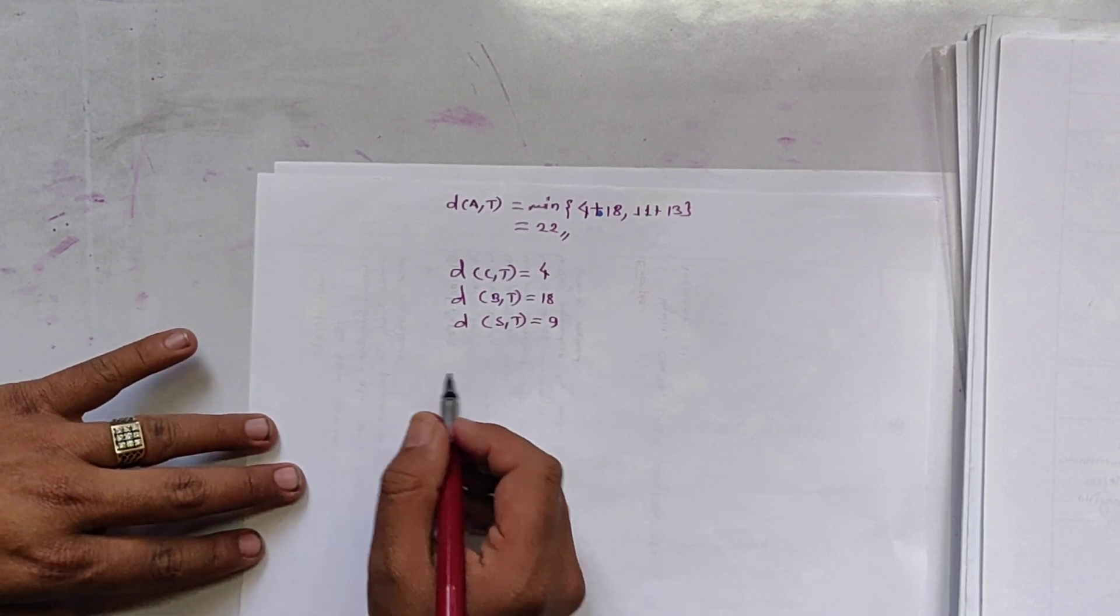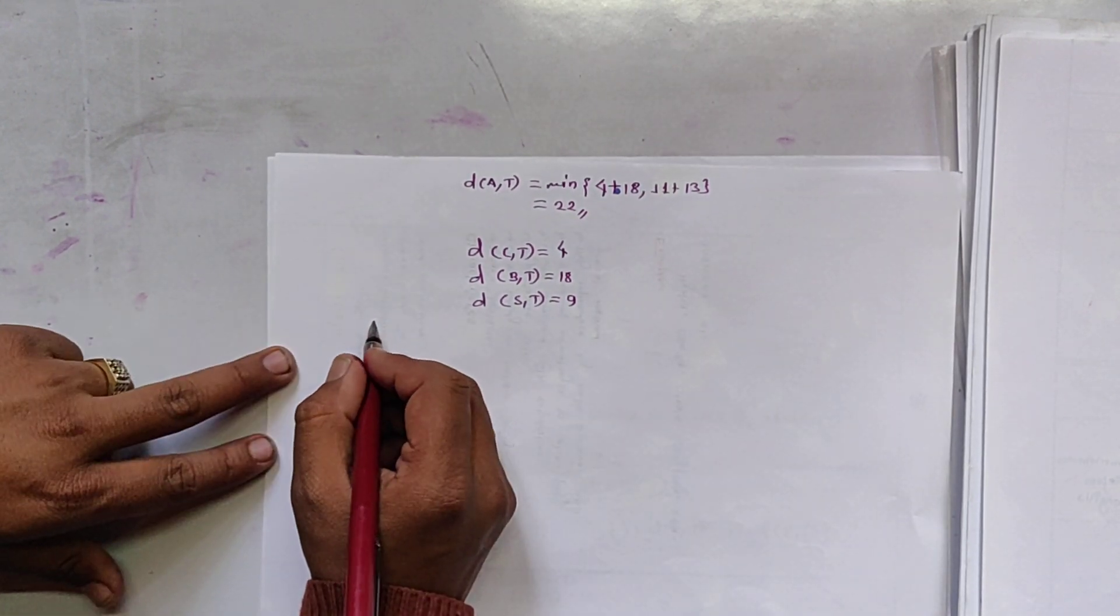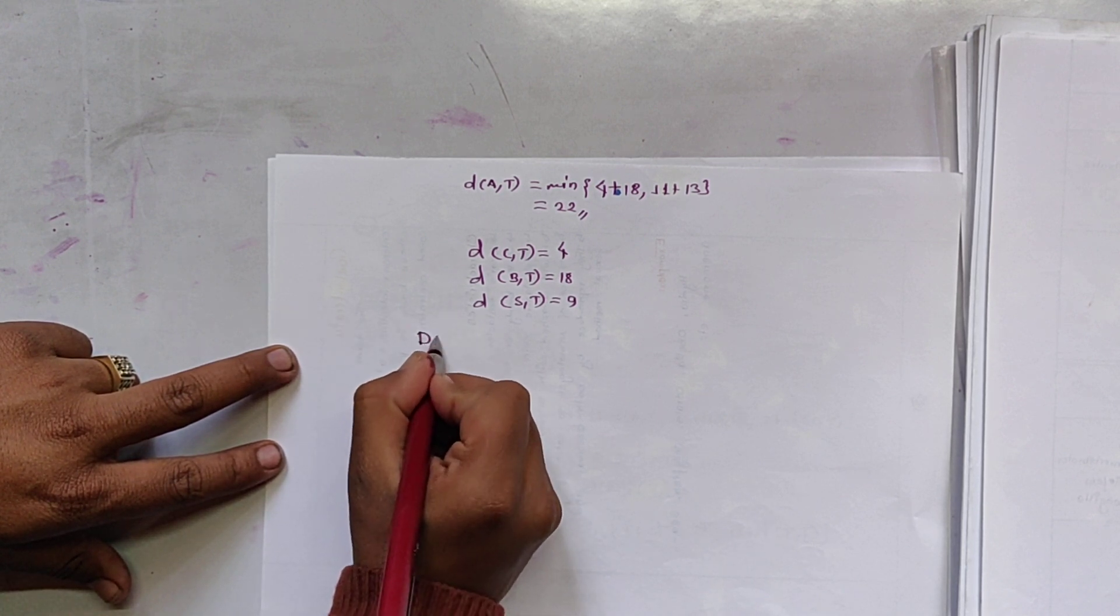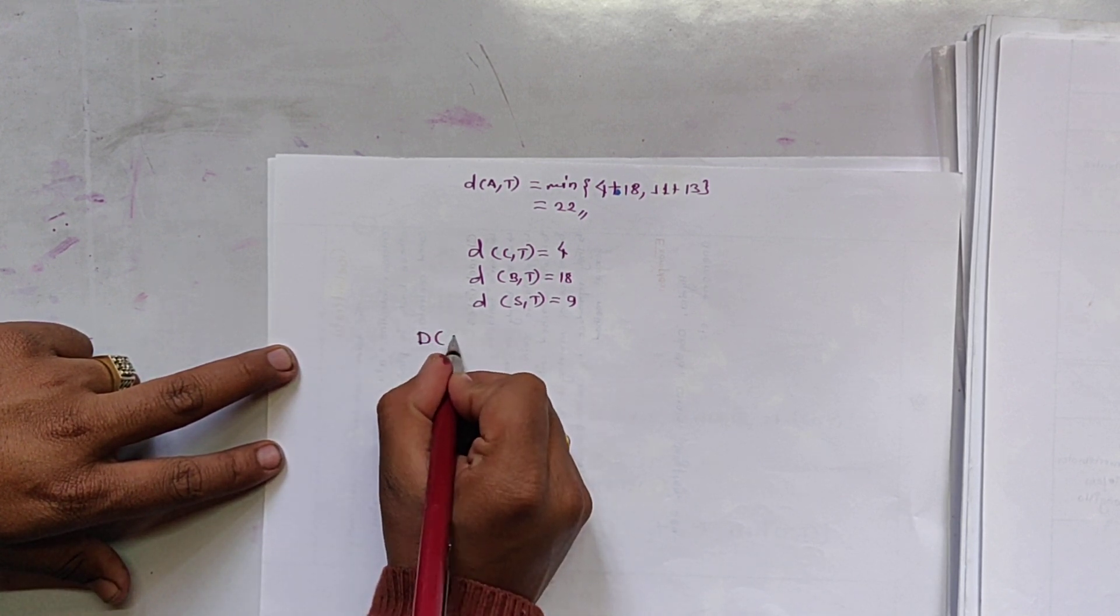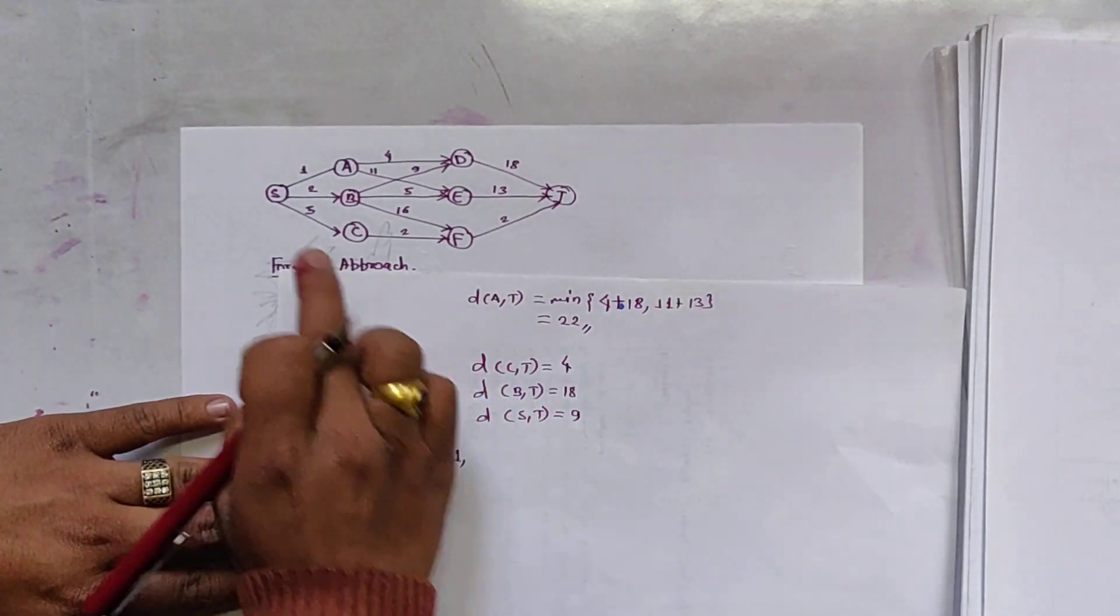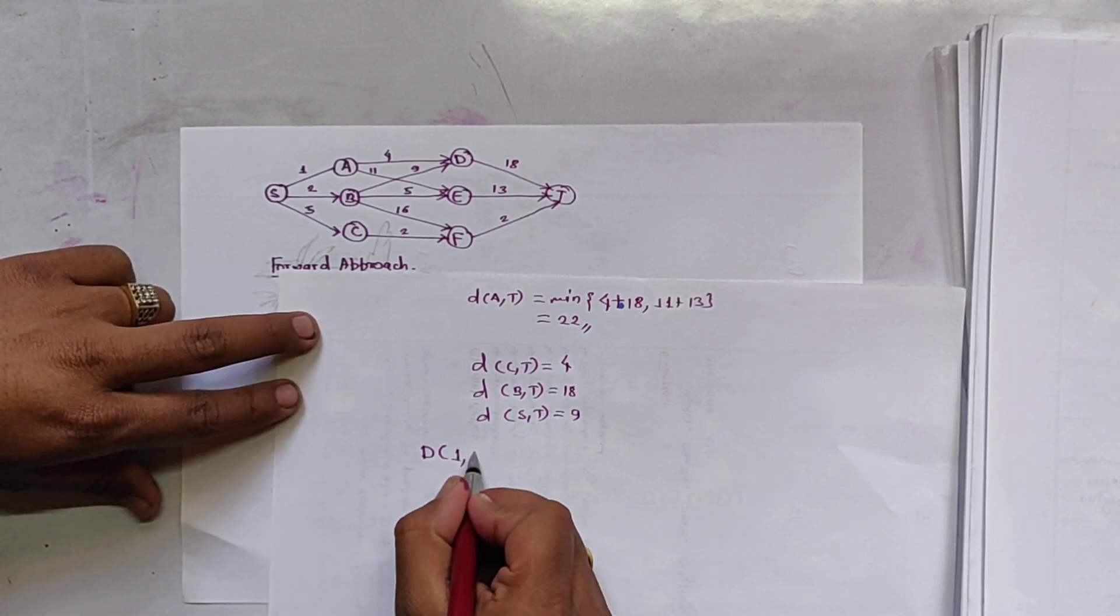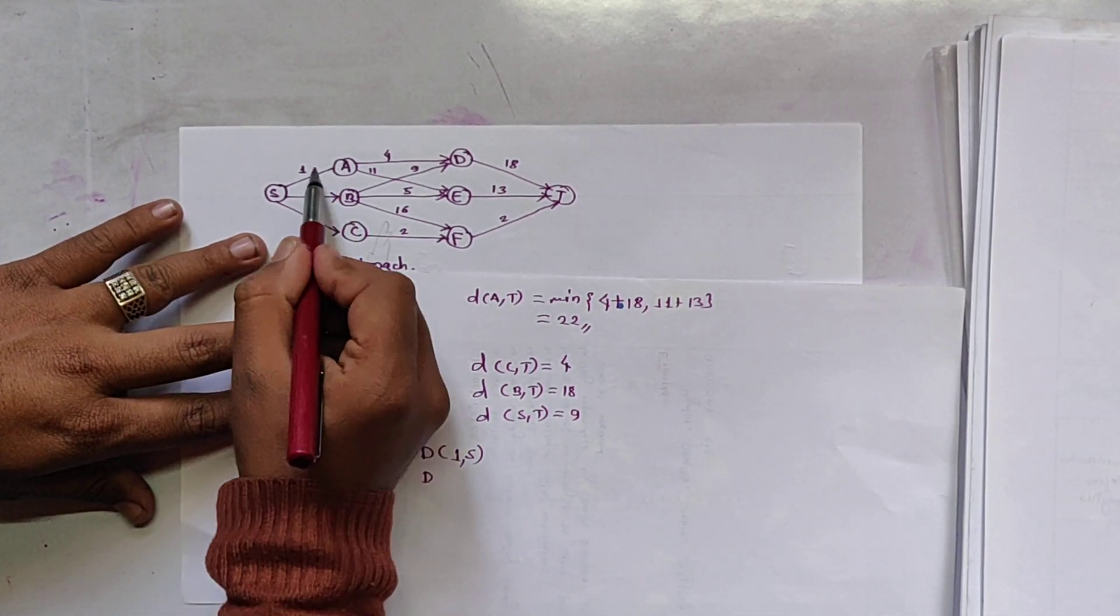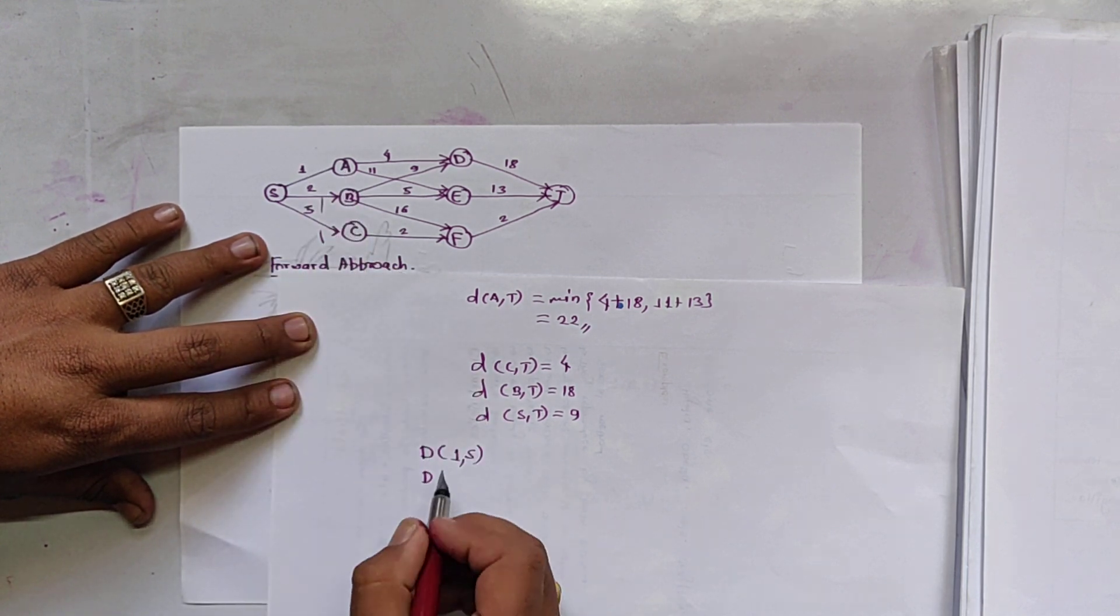So similarly, we have to find a path. For finding the path, we write in the form of stage. First stage was S. So first stage S. In second stage, there are A, B and C. So 2A.